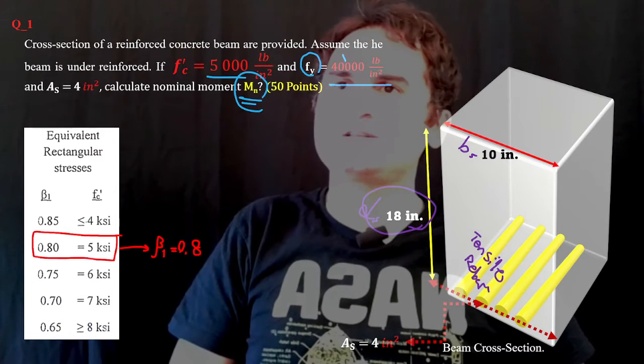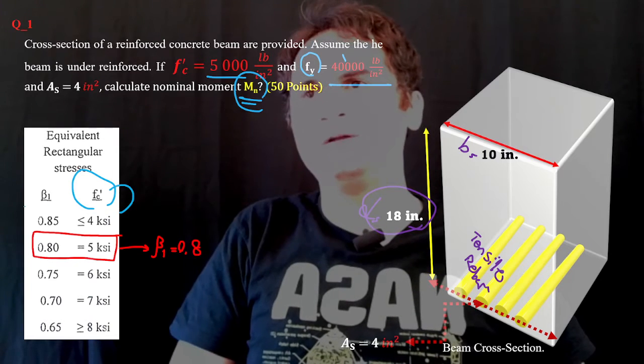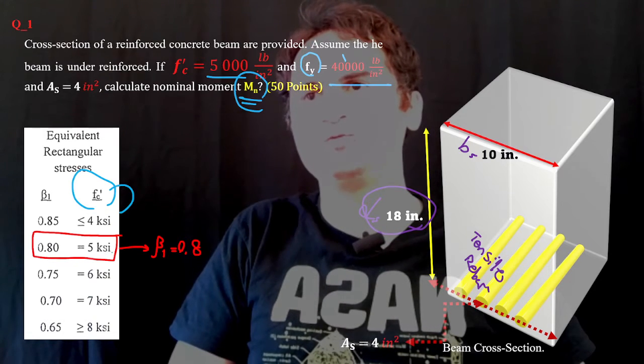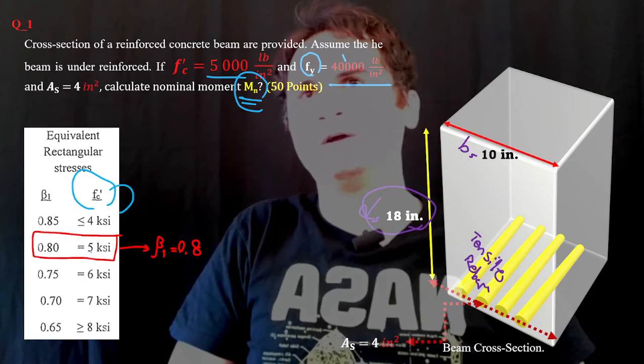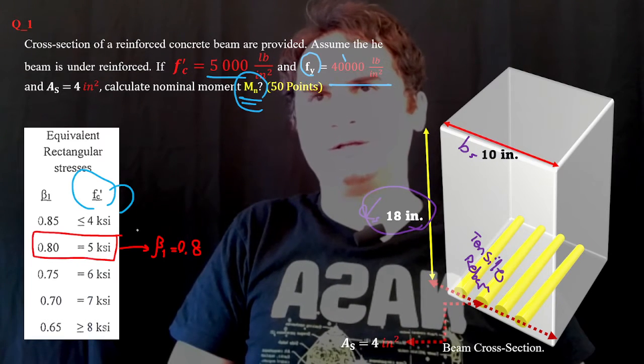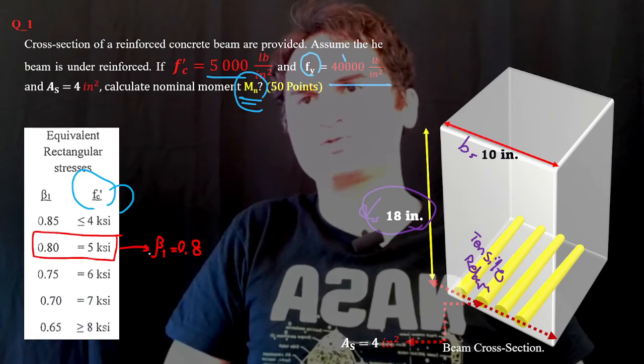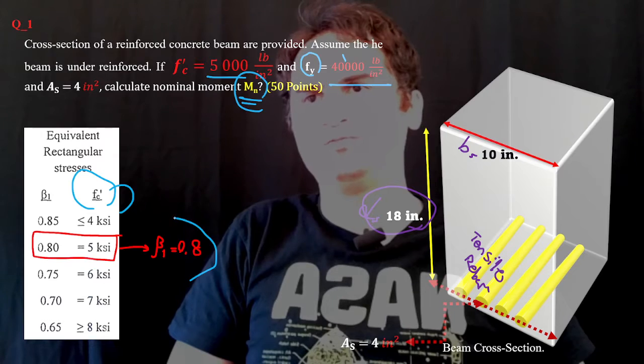First of all, based on f'_c, we need to jump to the table for beta and choose our beta. For 5,000 pounds per square inch, beta is equal to 0.8.